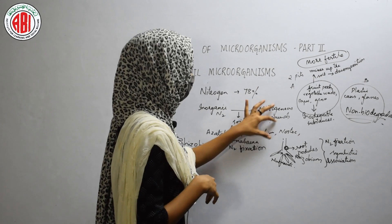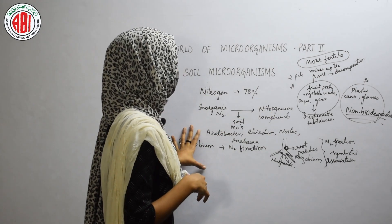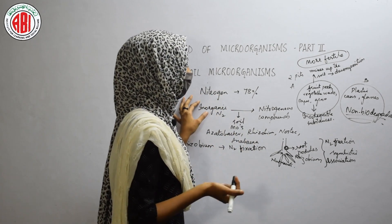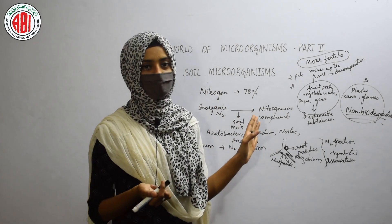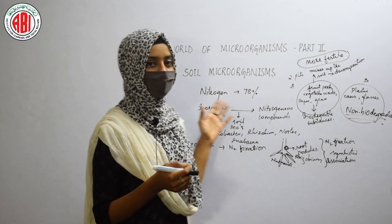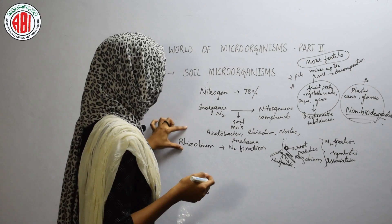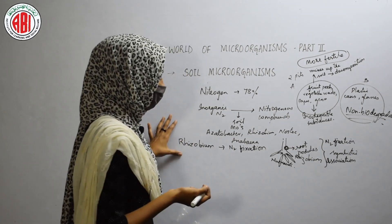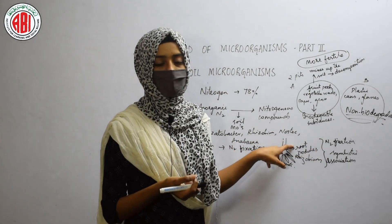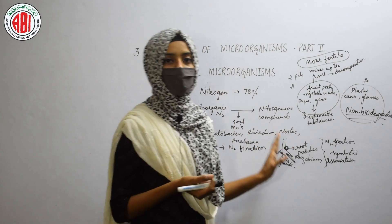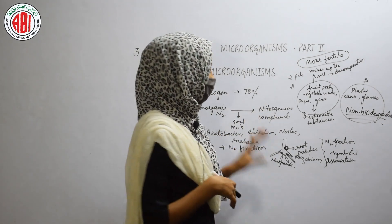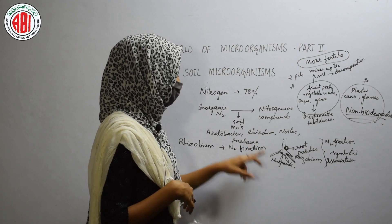Some examples of soil microorganisms are Azotobacter, Rhizobium, Nostoc, and Anabaena. These microorganisms help plants to get nutrients and minerals. Rhizobium forms a symbiotic association in the root nodules of leguminous plants. In this way, soil microorganisms also help plants in nitrogen fixation.